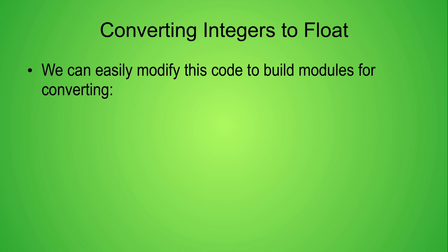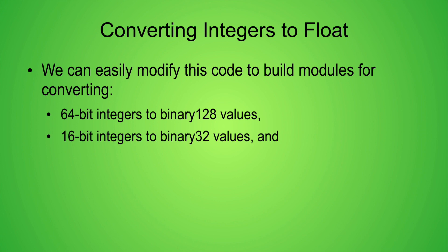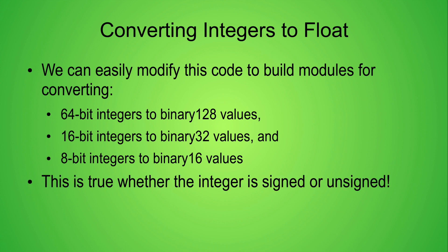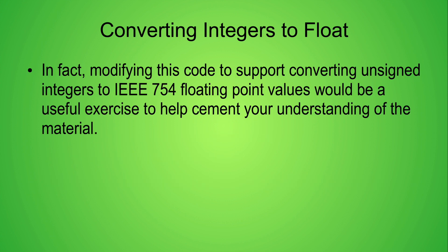Now that we have seen how to convert 32-bit signed integers into a binary64 result, it should be trivial to modify the code to convert 64-bit integers into binary128 values, 16-bit integers into binary32 values, and 8-bit integers into binary16 values. You should even be able to modify the code to convert unsigned integer values to their larger corresponding floating point values. As an exercise, I would encourage you to modify the code so it's capable of converting unsigned integers to floating point values.